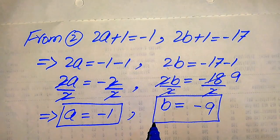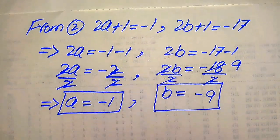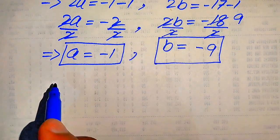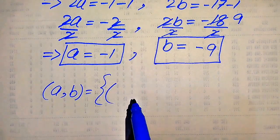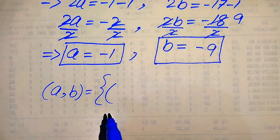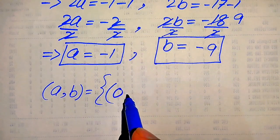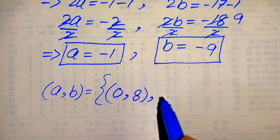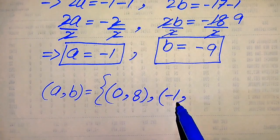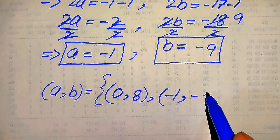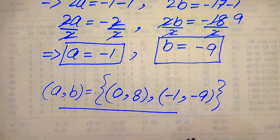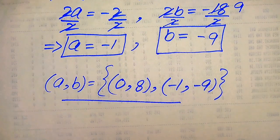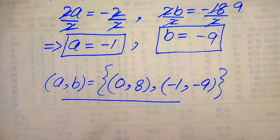This is the value of b from Case 2. Finally, there are 2 solutions of the given equation written as ordered pairs: the first solution is (a, b) equals (0, 8), and the second solution is (a, b) equals (minus 1, minus 9). These are the 2 final solutions of the given equation. Thank you for watching this video — please subscribe to my channel for more exciting videos.